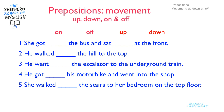OK, here are the answers. 1. She got on the bus and sat down at the front. 2. He walked up the hill to the top. 3. He went down the escalator to the underground train.